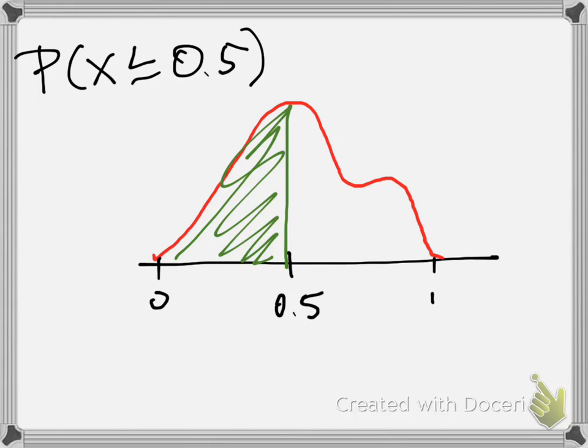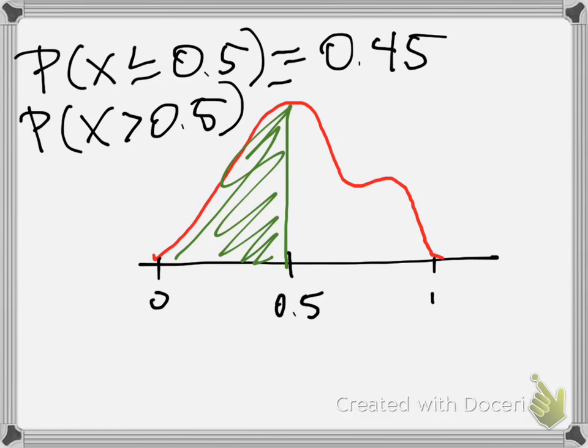Which would of course mean that the probability that X is greater than 0.5 would be the complement of that, which would be this area to the right of 0.5. It would also be 1 minus 0.45, so the complement would be 0.55.